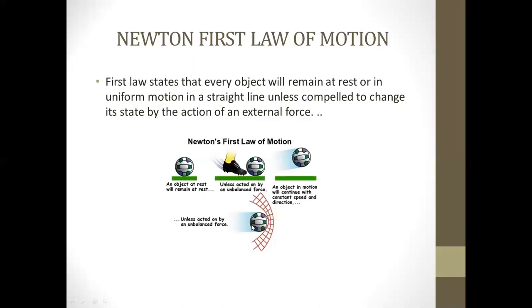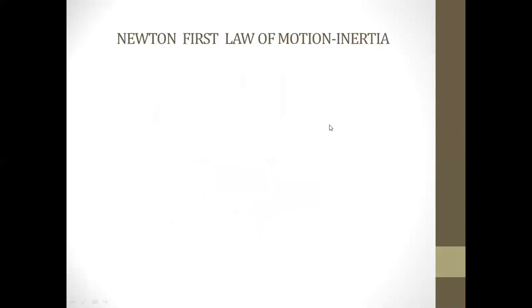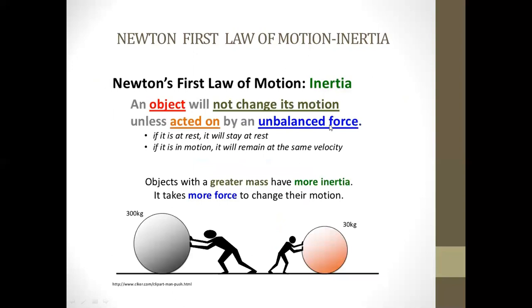So this was Newton's first law. Newton's first law of motion is also called inertia. So what is inertia? An object will not change its motion unless acted on by an unbalanced force. Inertia is a property which opposes any state of motion or a state of rest.